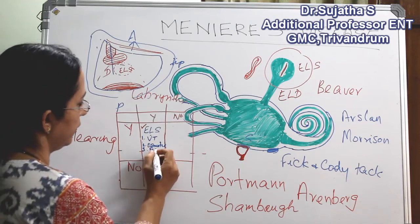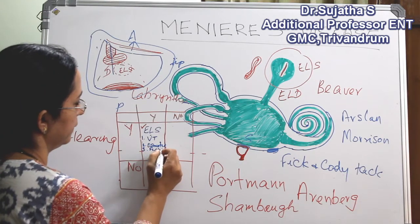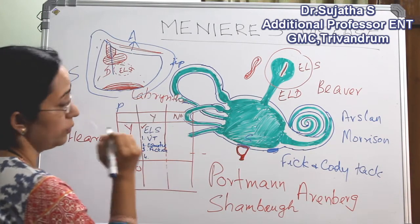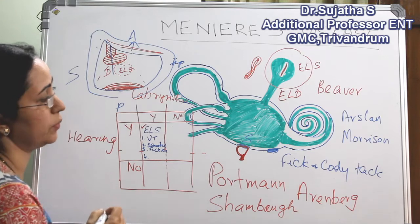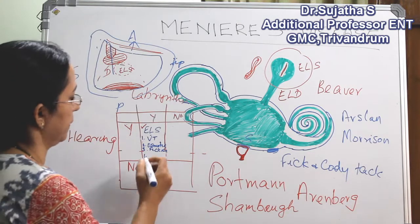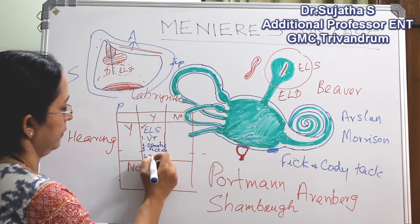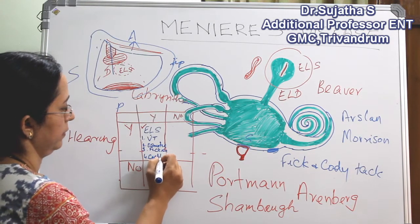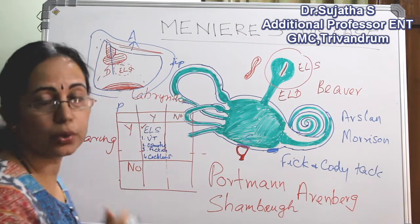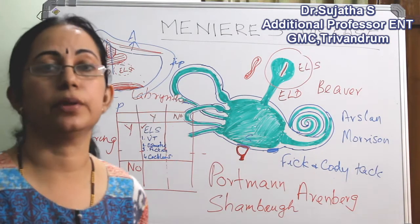Here the third comes the fish and Cody procedure. And the fourth one is cochleosarculotomy.